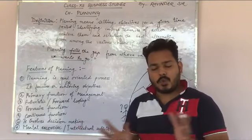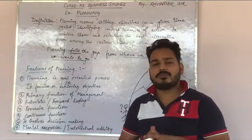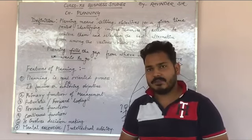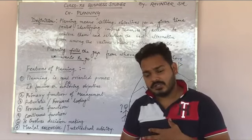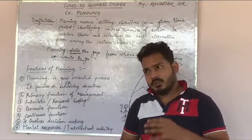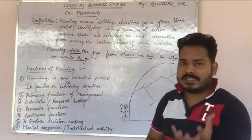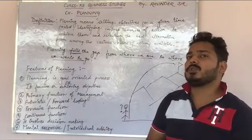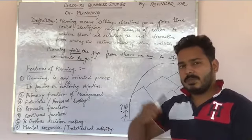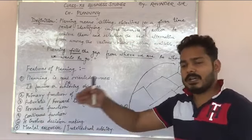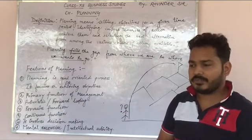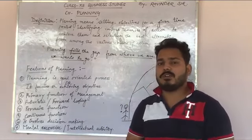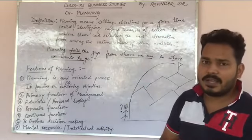Students, we have discussed so many times about the functions of management. There are five functions of management, and we have discussed this in the first chapter too. जो functions होते हैं वो actually series में, sequence में होते हैं. Step by step हम एक function के बाद दूसरे function को perform करते हैं. तो इस sequence में जो first and foremost function of management होता है, वो होता है Planning.